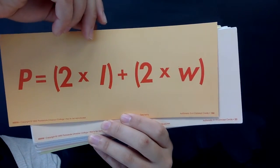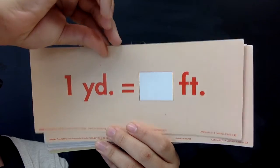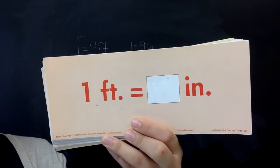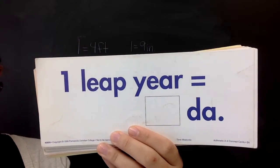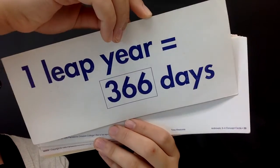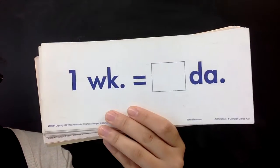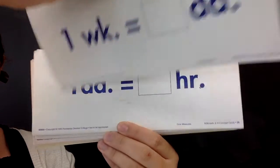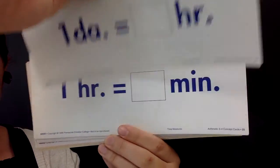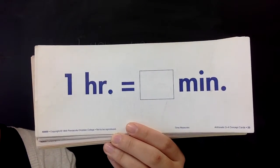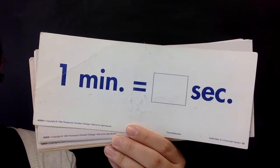One yard equals how many feet? Three. One foot equals how many inches? Twelve. One leap year equals how many days? Three hundred sixty-six. One year equals how many months? Twelve. One week equals how many days? Seven. One day equals how many hours? Twenty-four. One hour equals how many minutes? Sixty. One minute equals how many seconds? Sixty.